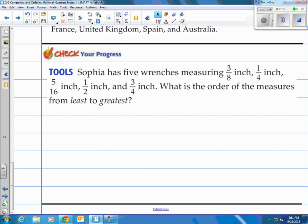Sophia has five wrenches measuring 3 eighths inch, 1 fourth inch, 5 sixteenths of an inch. I don't know why that didn't come in. There's an actual fraction, by the way. 1 half inch and 3 fourths of an inch. What is the order of the measures from least to greatest? Well, let's change all these to decimals. So we got 3 eighths. That's going to be 0.375. 1 fourth is going to be 0.25.